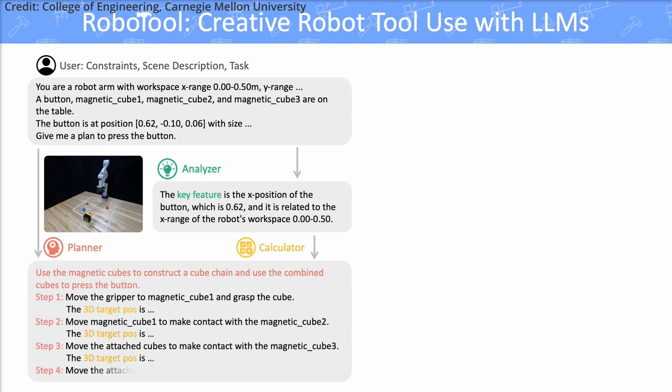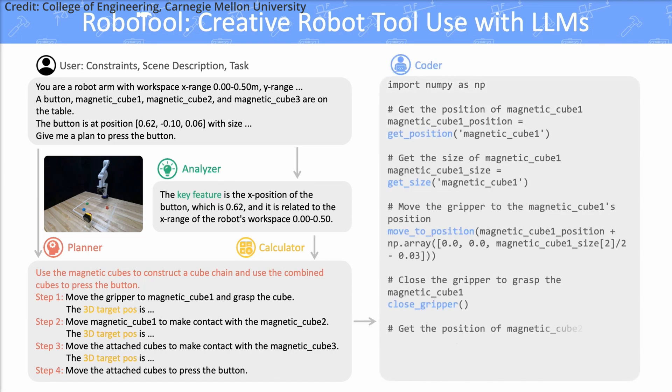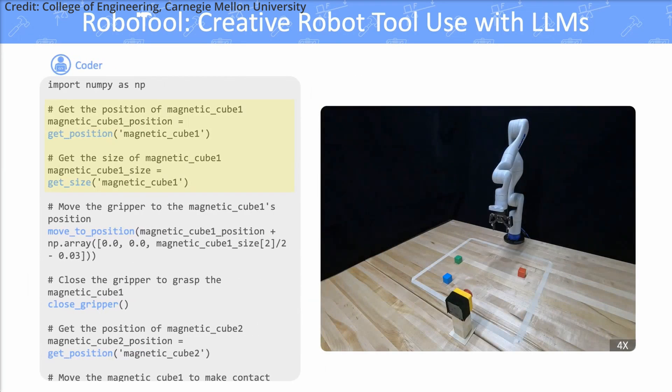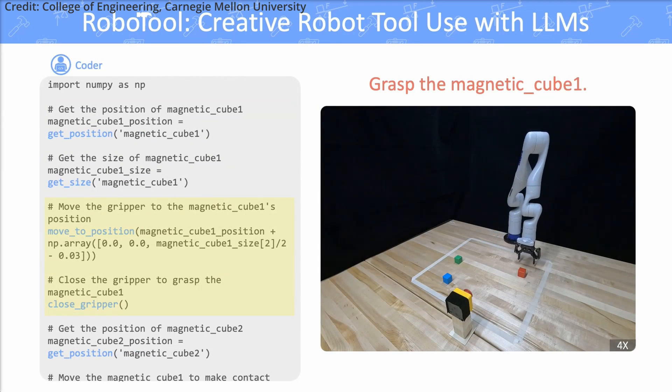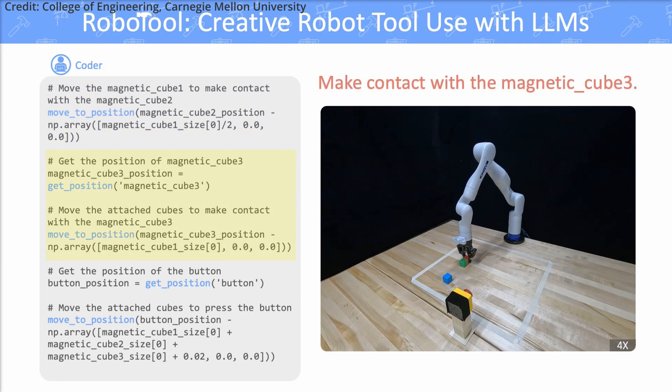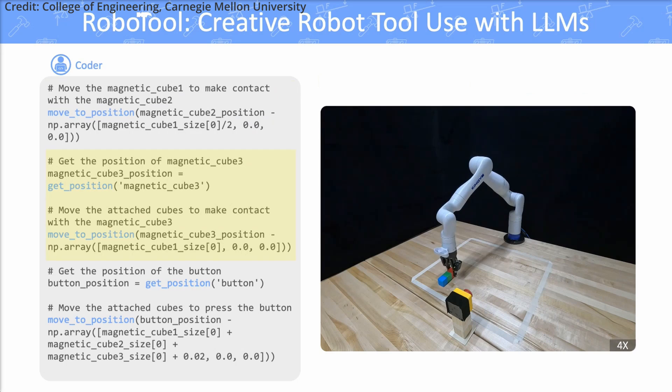In addition, RoboTool utilizes LLMs to process natural language instructions about a robot's environment to generate directly executable Python code. This code serves as a plan for the robot to complete tasks using whatever tools are at hand. Importantly, instead of giving robots concrete directions, RoboTool provides a high-level objective, leaving the specifics of tool use to the robot's discretion.